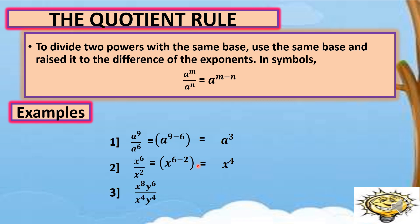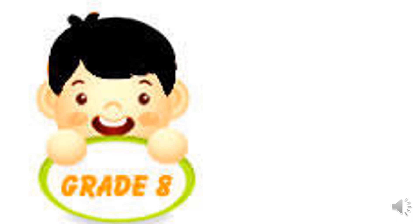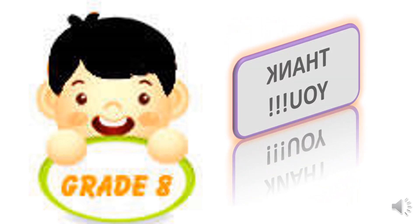Lastly, x raised to 8 times y raised to 6, divided by x raised to 4 and y raised to 4. As you can see, you have the same bases: x and y. So write x raised to 8 minus 4, and y raised to 6 minus 4. Simplifying: 8 minus 4 gives x raised to 4, and 6 minus 4 gives y squared. So the result is x raised to 4, y raised to 2. I hope the quotient rule, the product rule, and the power rule are clear. We'll continue this lesson in the next video.